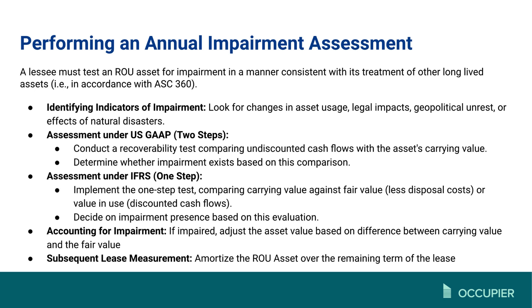If you are following US GAAP, you go through two steps versus IFRS which has one step. The difference is that for US GAAP, the first step is conducting a recoverability test by comparing the undiscounted cash flows with the asset's carrying value. If that indicates you're not going to recover the asset, you go to the next step — which is similar to the IFRS step — comparing your carrying value against the fair value.